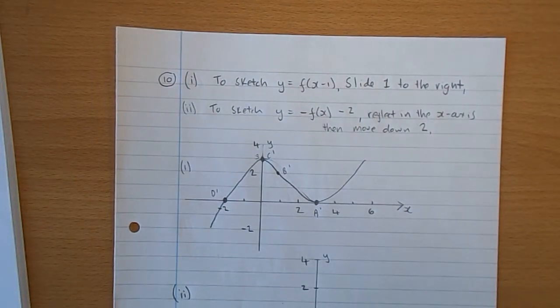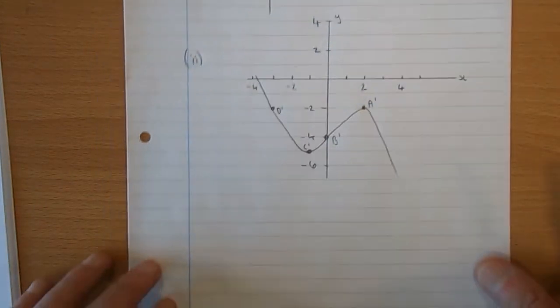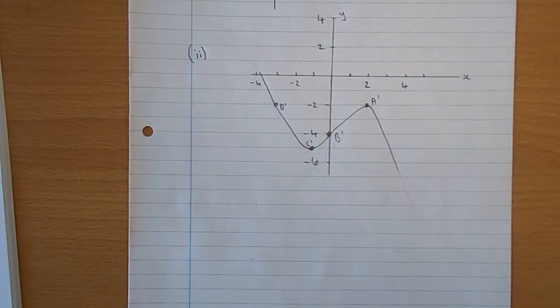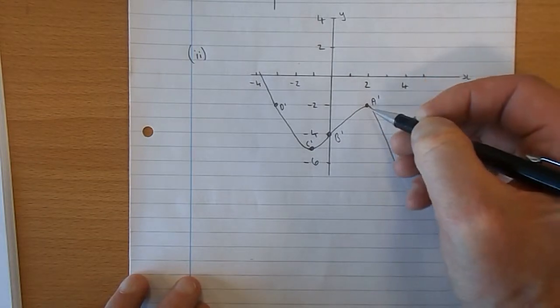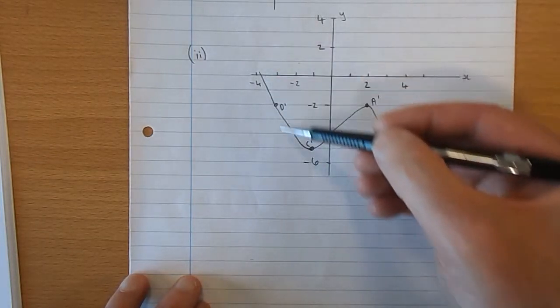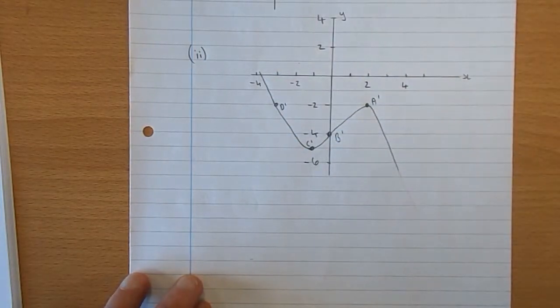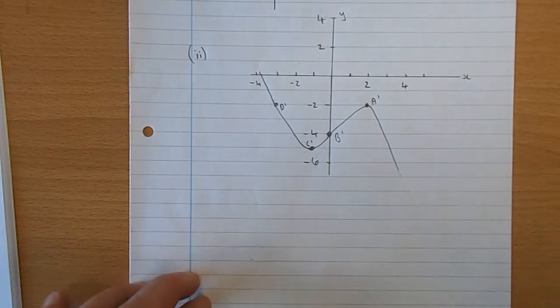Part 2: reflect it in the x-axis, move it down 2. And you can see there that the image is going to be upside down, and each point moves down 2. So that's my effort at that one there.